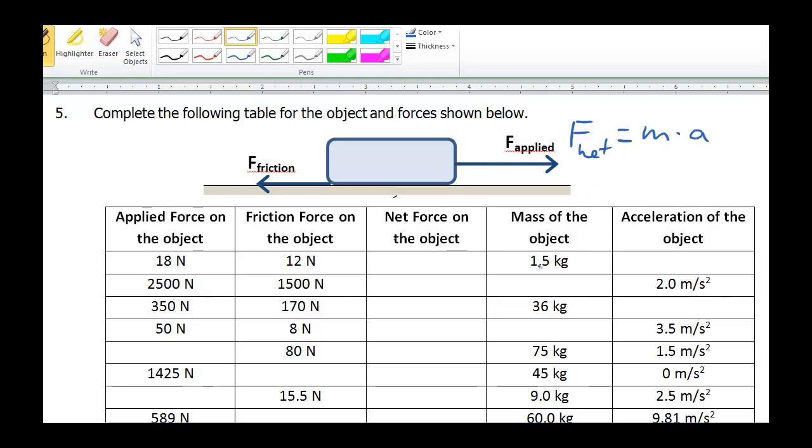So here we see the mass is 1.5 kilograms. In order to find the acceleration we would have to know the net force on the object. But that's easy to figure out. We can do applied force of 18 newtons minus 12 newtons of friction force equals 6 newtons of net force to the right, because the applied force is to the right and it's stronger than the friction force. So now we can use this equation.